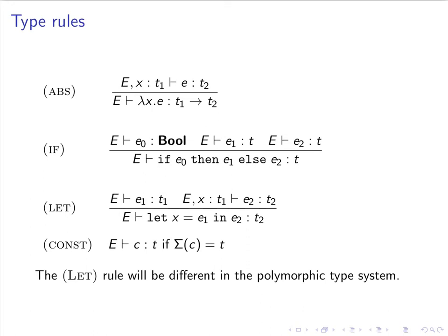There is one last type rule, because we have constants. In order to type constants, we need to have a constant environment, sigma, which maps constants to types. Whenever we want to type a constant, we just look up the type of the constant in the constant environment. If the type is T, then the type of C is T. That's all.